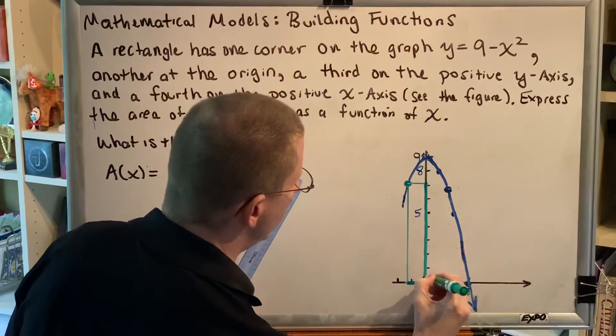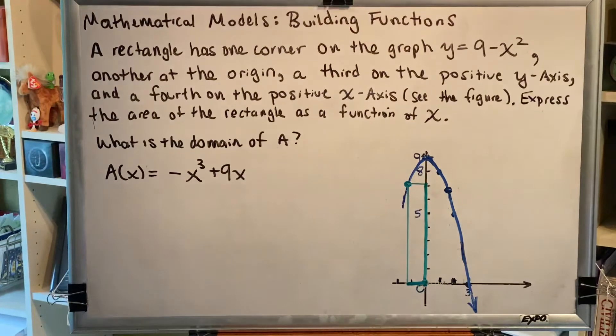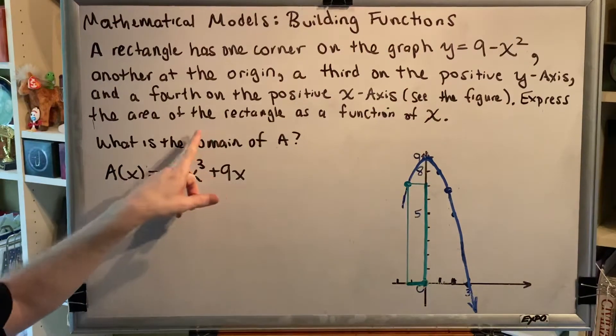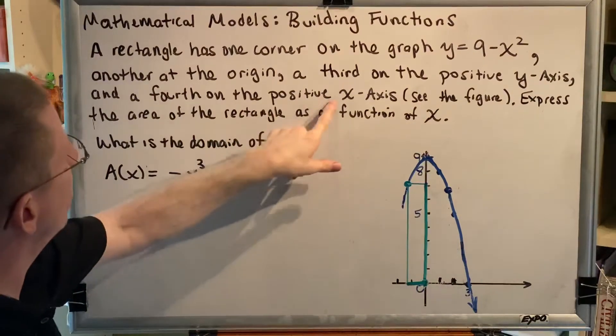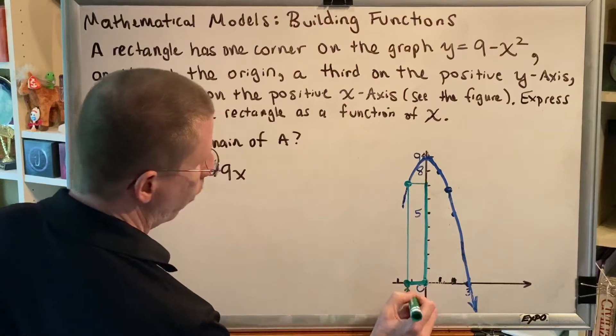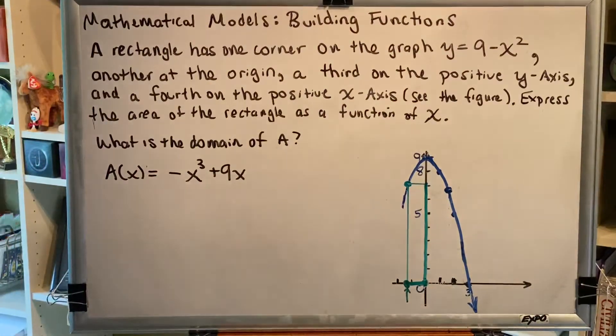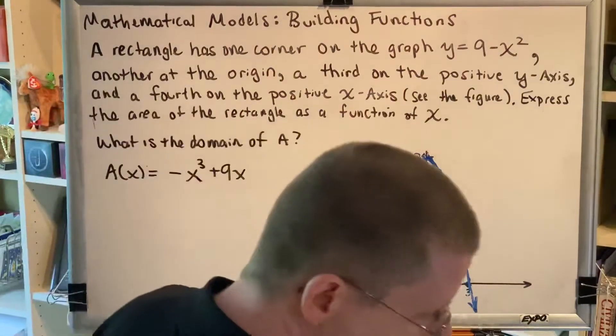Now, is this an acceptable rectangle? The answer is no. And the reason why is because it says that the fourth point must be on the positive x-axis, and this right here is a negative value, which means that this green rectangle is not acceptable.